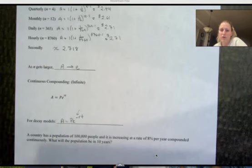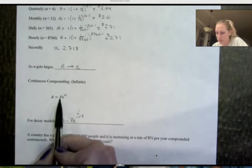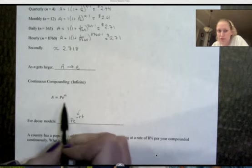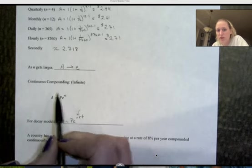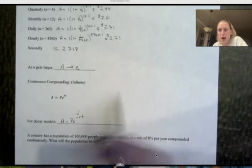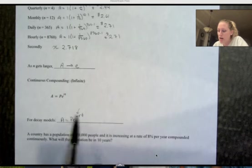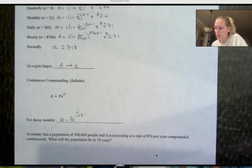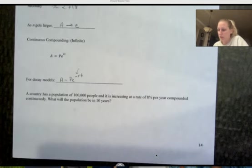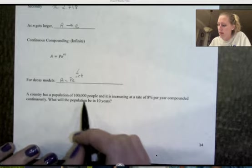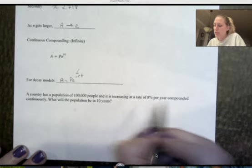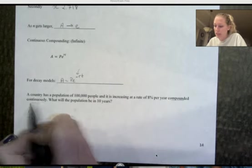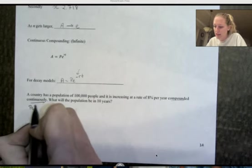So we have this formula, which is infinitely compounding something. This is infinitely compounding or continuously compounding is what we'll call it. We're going to use e because of that constant that we discovered as n got bigger. So this is called the PERT formula for obvious reasons. It spells PERT, but the r and the t are being multiplied in the exponent. This is for exponential growth models. We can also use PERT for decay, the only difference is the rate will be negative.